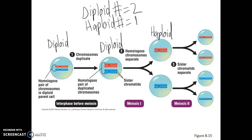Each cell has only one chromosome, though those chromosomes are still duplicated at this point. The parent cell started with two chromosomes, and at the end of meiosis 1 each daughter cell has only one chromosome. It's these haploid daughter cells that then go through division 2, known as meiosis 2. At the end of meiosis 2, we started with a cell that had one chromosome and we end with cells that still have one chromosome — so the cells at the end of meiosis 2 are still haploid.